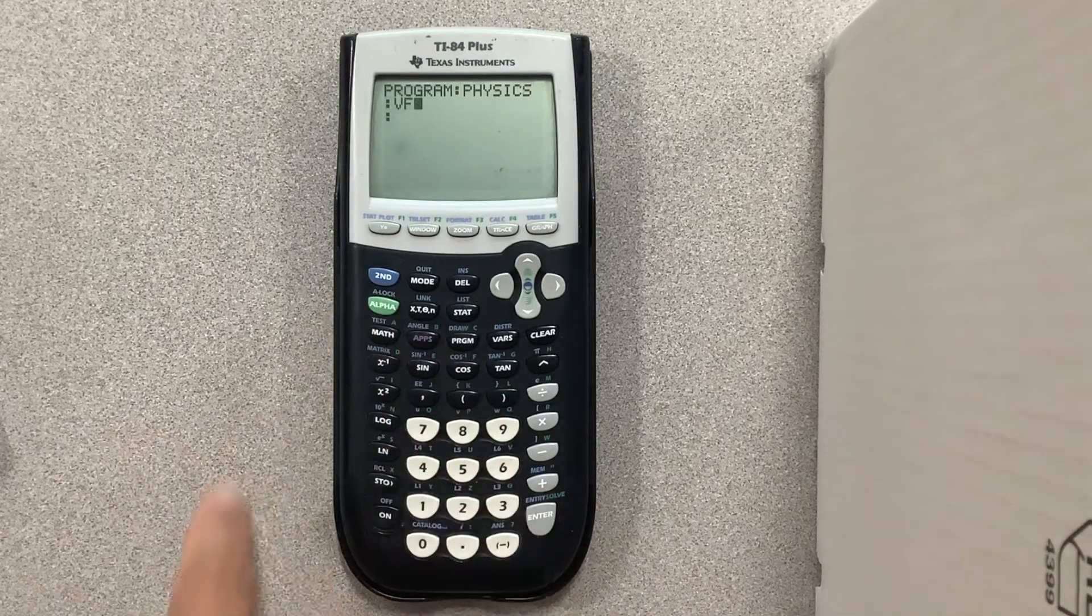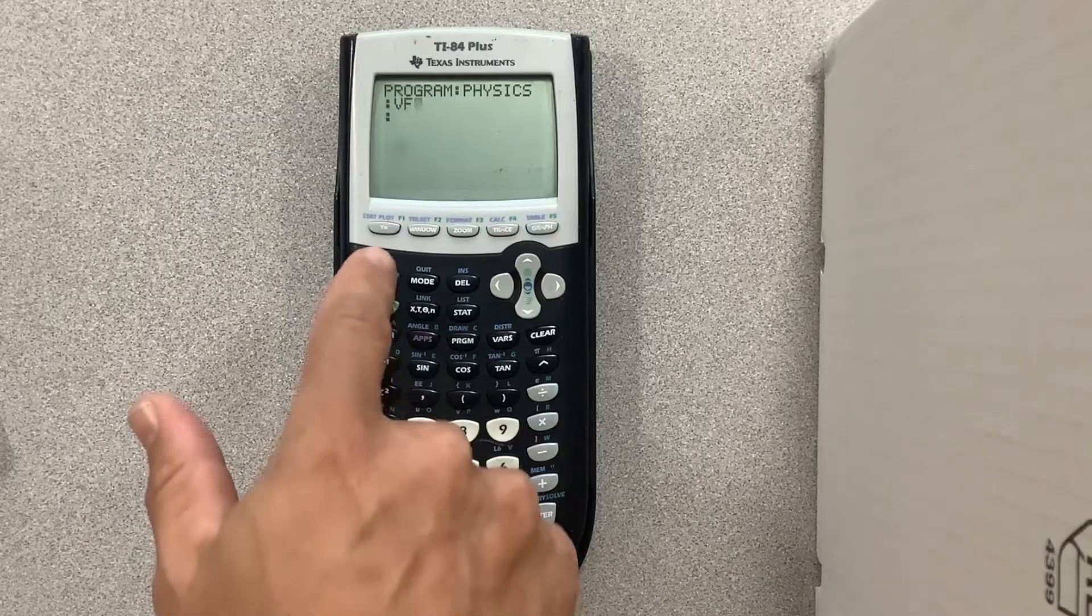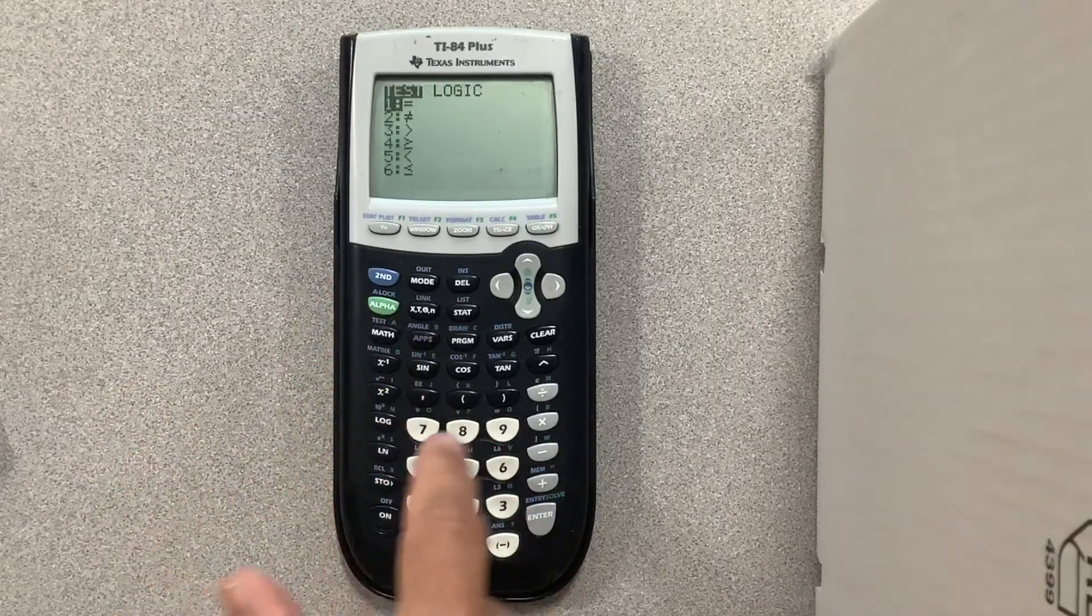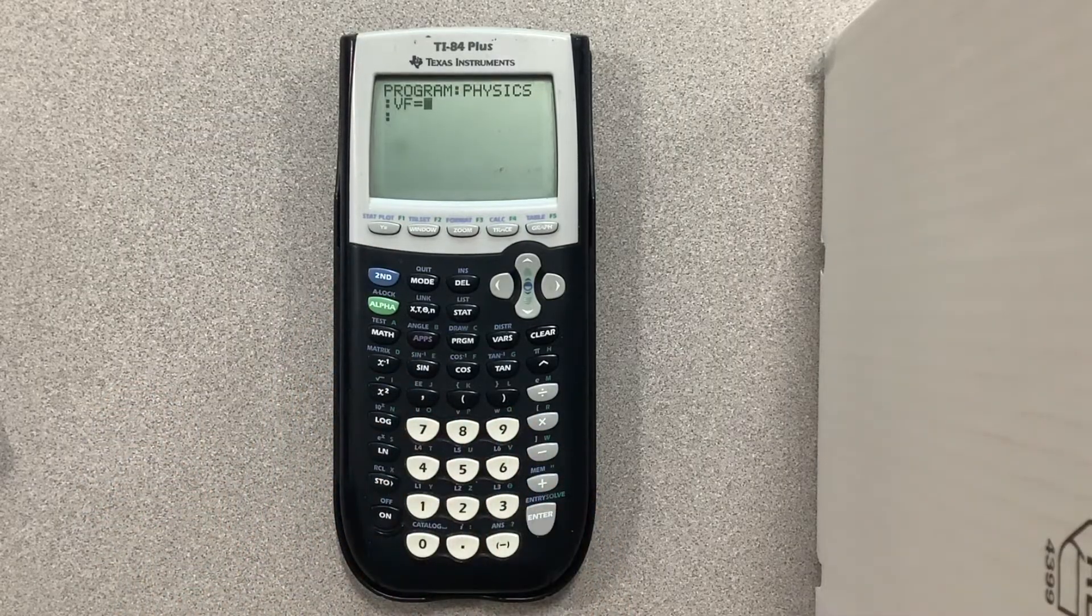Now you need the equals so exit alpha lock, enter second test. That will get you to some symbols. I type the equals.